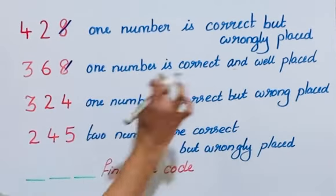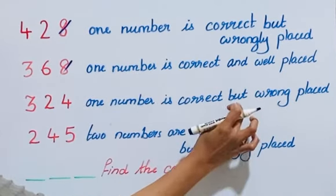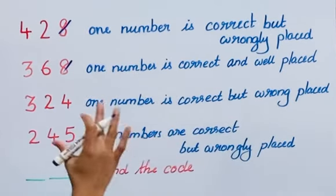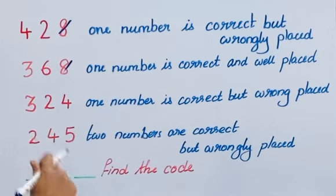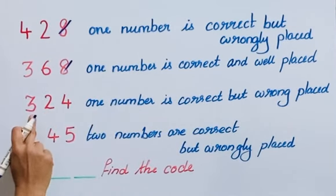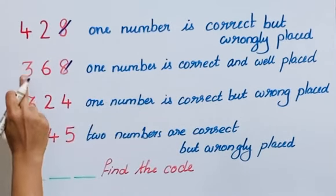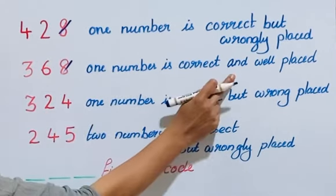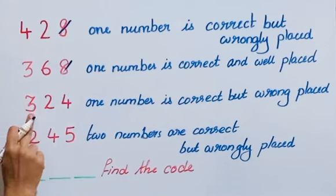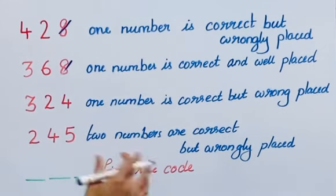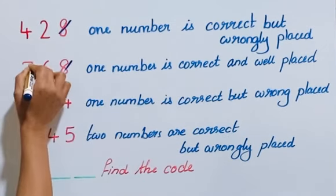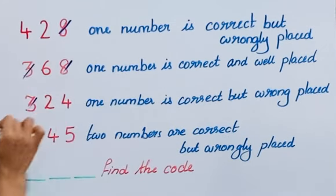Checking if the same number appears in both clues 2 and 3 — yes, 3 appears in both. If it is well placed in clue 2, then it can't be wrongly placed in clue 3. Hence, cancel 3 as well.